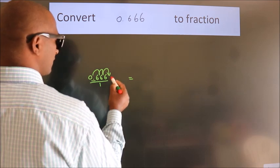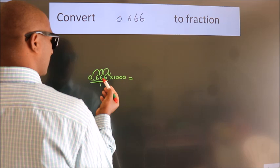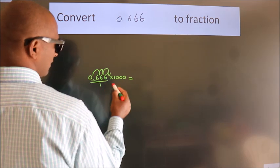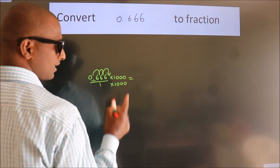we have to multiply it with 1000. Whatever number you are multiplying in the numerator, in the denominator also do the same. Next.